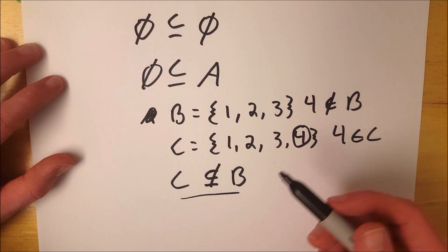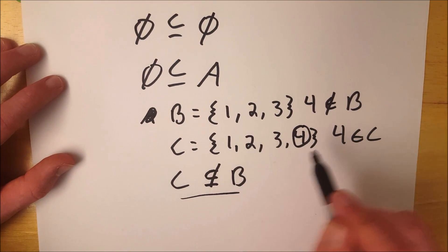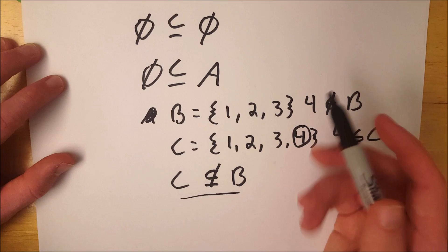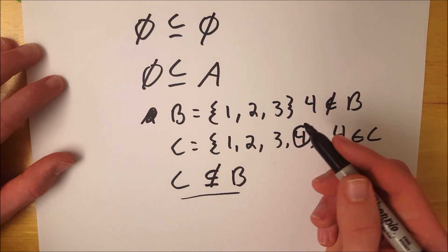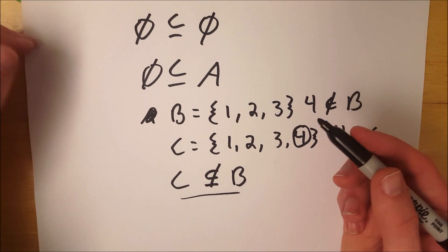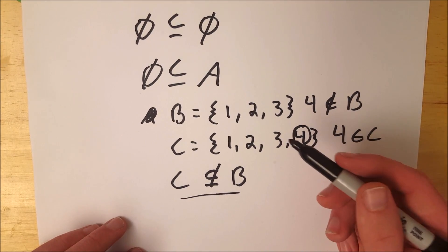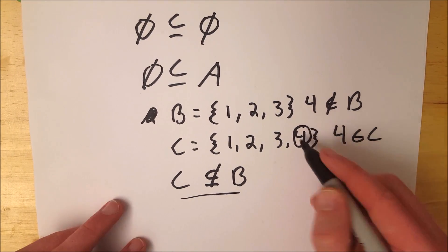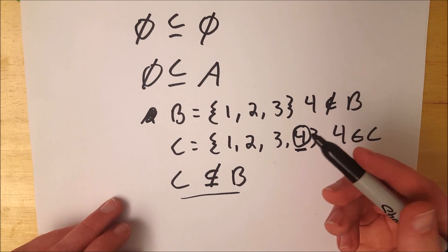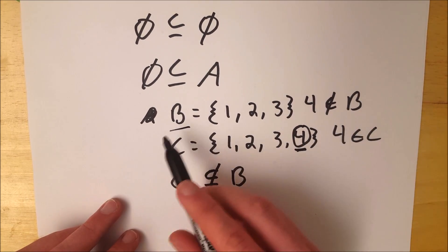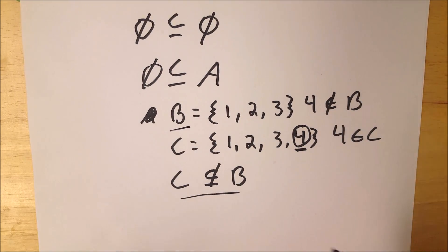So all you need to do to disqualify a set from being a subset of another set is identify an element that it has that is not in this other set. So in order for a set to not be a subset, it must have one or more elements, it just must have an element that is not in this other set, in this case B, the set containing 1, 2, 3.